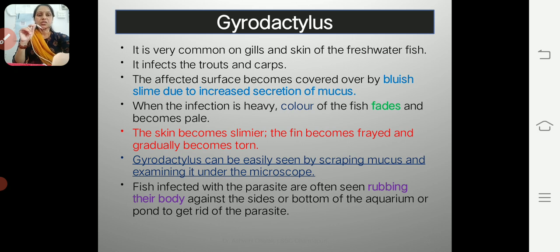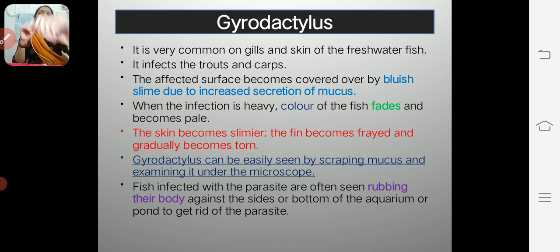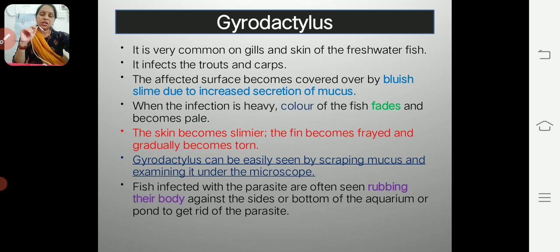To observe Gyrodactylus in the lab, we can scrape the mucus from the infected part of the fish body and place it on a slide to observe under the microscope.